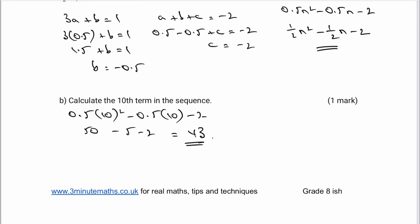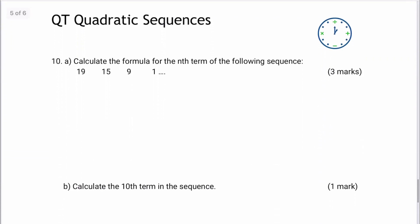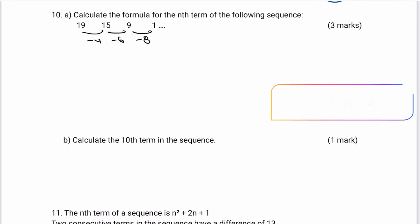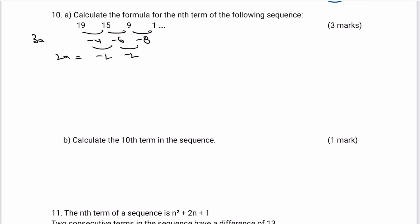Moving on to question 10, we use the same approach to work out the nth term. The first line differences are minus 4, minus 6, and minus 8. Therefore the second line difference is minus 2 each time. That minus 2 is equivalent to 2a, so a equals minus 1, giving us minus 1n squared — though we would normally write that as minus n squared.